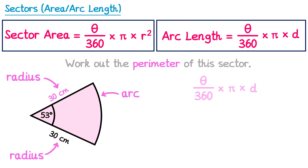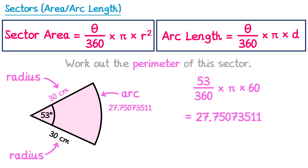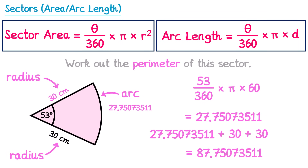So let's use the formula for the length of the arc. We need the angle theta, which is 53, and the diameter, which will be double 30, so 60. Typing this into your calculator gives 27.75 and so on — I'm not going to round this because it's not the end of the question. To find the perimeter, we just add together all three lengths: the arc, which is 27.75..., plus the first radius of 30, plus the second radius of 30. Adding all of these together and rounding to one decimal place gives 87.8 centimetres.